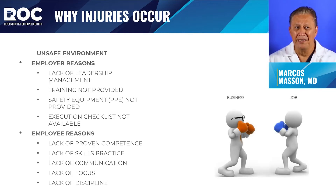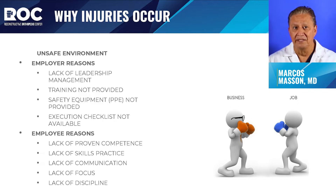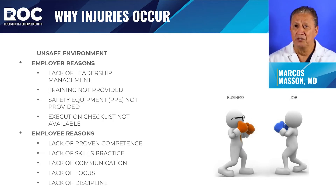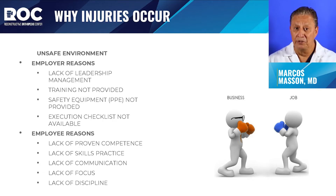Why injuries occur has three parts. First, is there an unsafe environment? Second, employer reasons — which include lack of leadership and management. Training is not provided for the employee. Safety equipment and protective devices are not provided, and no execution checklists are available before you start a job daily, weekly, or on a monthly basis.